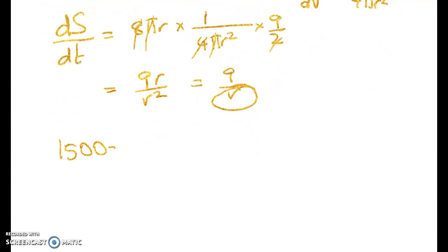We've got 1500 is 4 thirds pi r cubed. Solving that gives me r cubed is equal to this. When I did that, so don't round that too hard. When I did that on my calculator before, I got 358.0986.